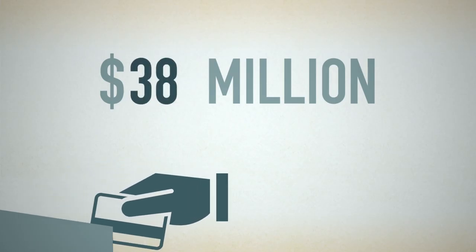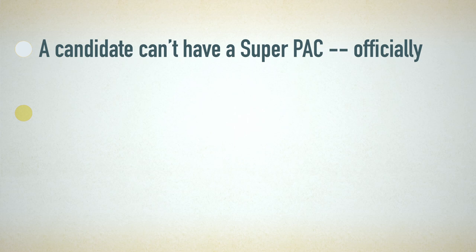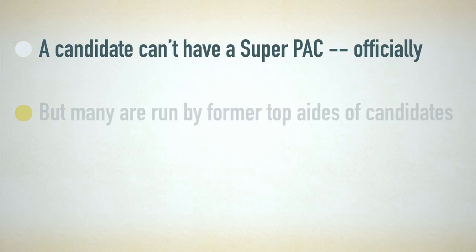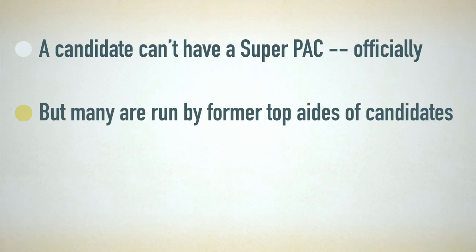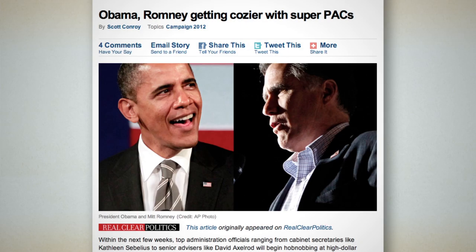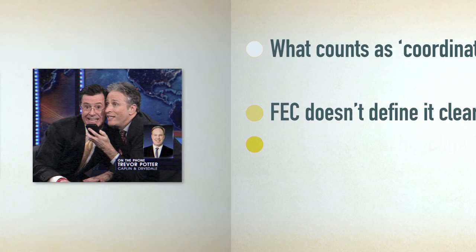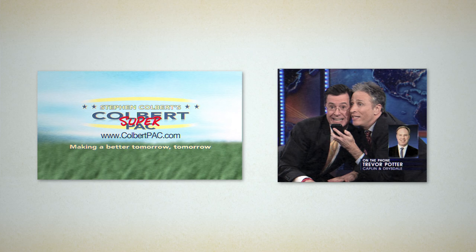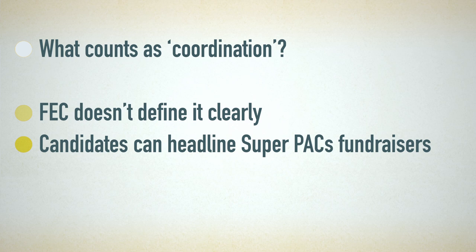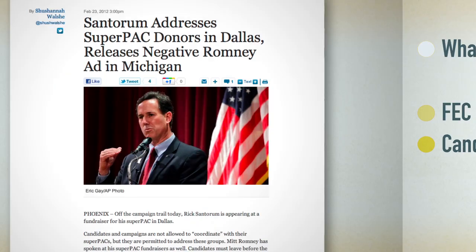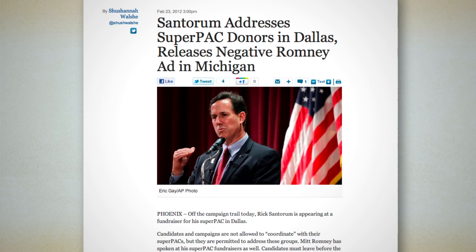In other words, a Super PAC can act as a shadow campaign. Officially, a candidate can't have a Super PAC, but there's no law saying a candidate can't have connections with these Super PACs, and many Super PACs are in fact run by former top aides of these candidates, and many candidates are encouraging people to give to their Super PACs. Although a Super PAC can't coordinate with the candidate how it spends its money, the FEC has been exceedingly lenient in defining coordination, as we saw with Stephen Colbert and Jon Stewart's satire. Candidates can headline fundraisers for the Super PACs that are supporting them, just as long as they don't directly ask for donations beyond the legal limits of their campaign committees.